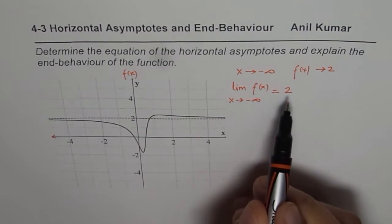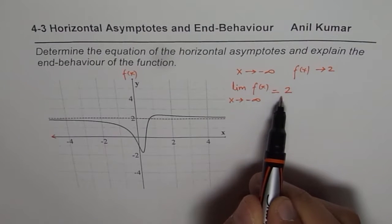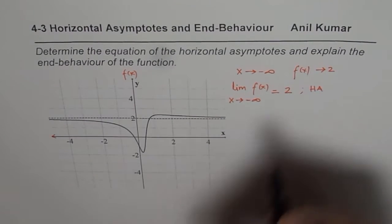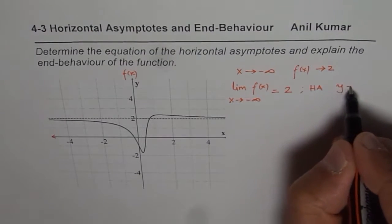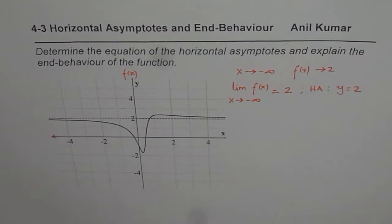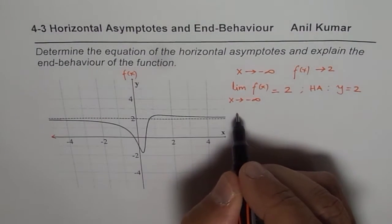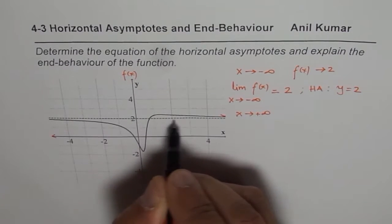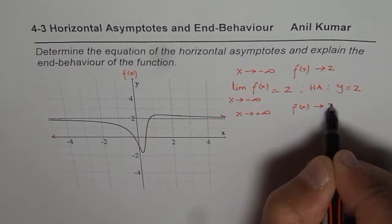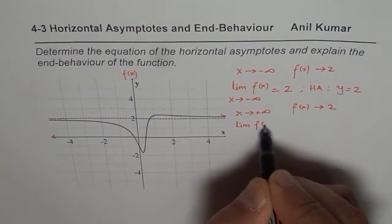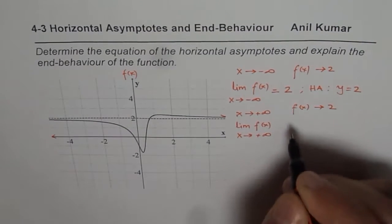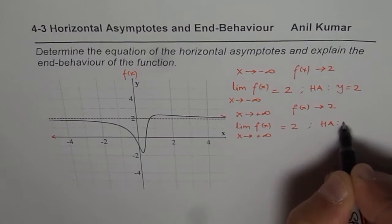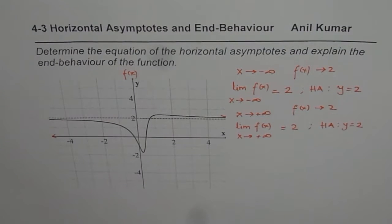Whenever a function approaches a value, we say that the horizontal asymptote exists, and the equation of the horizontal asymptote is the value it approaches. So since the y value f of x is 2, we say y equals 2 is the equation of the horizontal asymptote. Similarly, when x approaches positive infinity, the function is also approaching 2 — the limit of f of x as x approaches positive infinity is equal to 2. Therefore from here also we see that the horizontal asymptote is y equals 2. In this case there is only one horizontal asymptote.